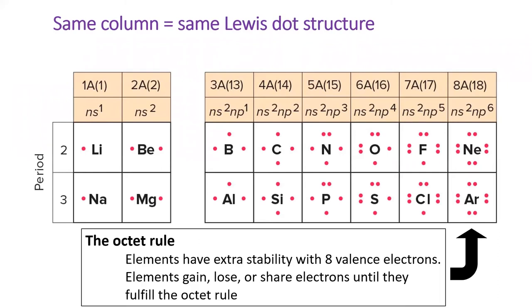We've already seen that having a full valence shell gives an element extra stability, as exemplified by the noble gases. Now we can give a name to this phenomenon, the octet rule. The octet rule states that elements will gain, lose, or share electrons until they have eight valence electrons, which corresponds to a full S and P subshell.